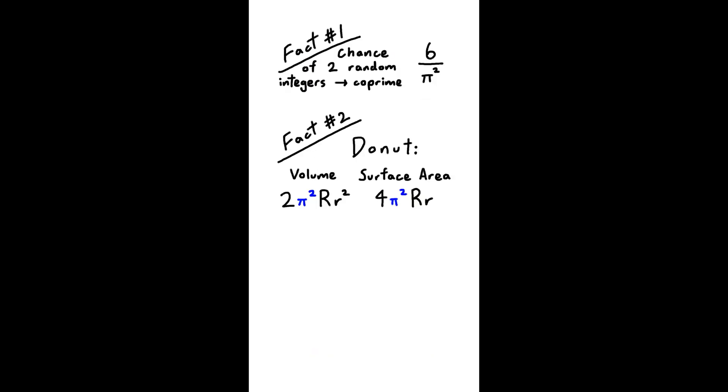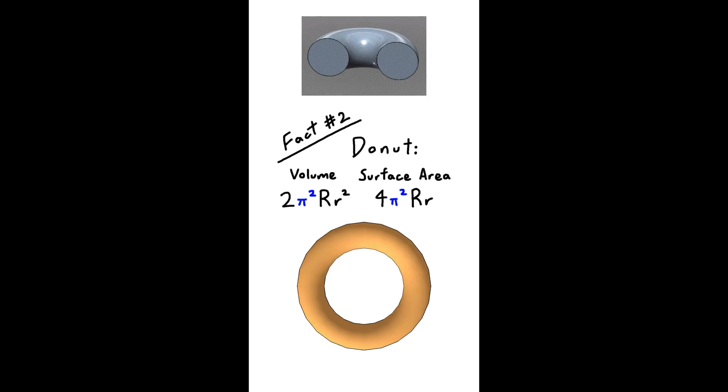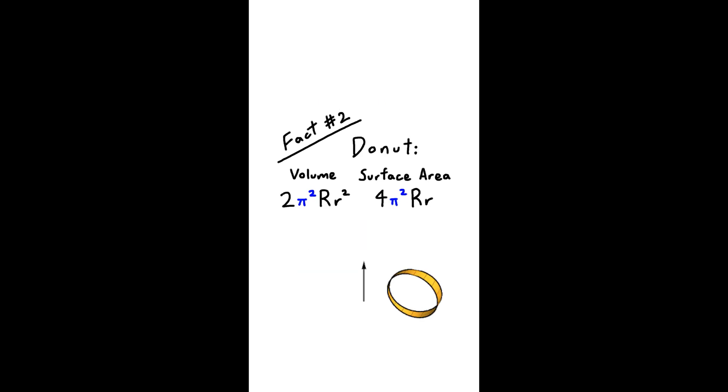As for the first two facts, the second one is true because there are two circles in a donut. One is the cross-section and the other is the donut itself, and each of those two circles contributes one pi to the formula, so you get pi squared. If you have studied calculus, think of the donut as a solid of revolution.